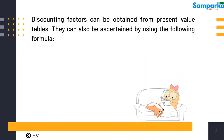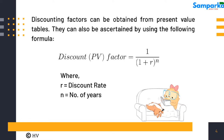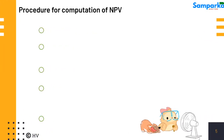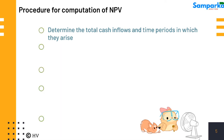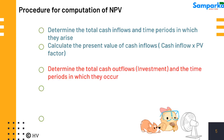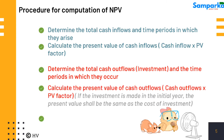Discounting factors can be obtained from present value tables, or they can be ascertained using the following formula. The steps are: determine the total cash inflows and the time periods in which they arise; calculate the present value of cash inflows by multiplying cash inflows by the PV factor; determine the total cash outflows and the time periods in which they occur; calculate the present value of cash outflows by multiplying cash outflows by the PV factor. If the investment is made in the initial year, the present value shall be the same as the cost of investment.